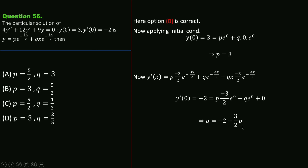Since P = 3, substituting gives Q = -2 + (3/2)·3 = 5/2. Therefore P = 3 and Q = 5/2, confirming option B is the correct answer.